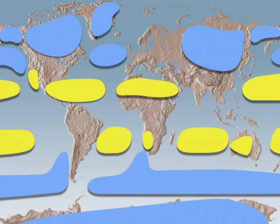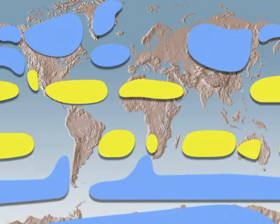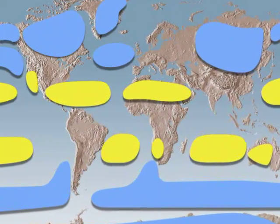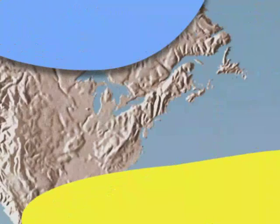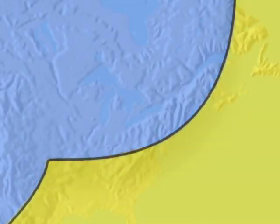Air masses are gigantic atmospheric volumes with very specific temperature and humidity characteristics. When two different air masses come into contact, they don't mix. They push against each other along a line called a front.